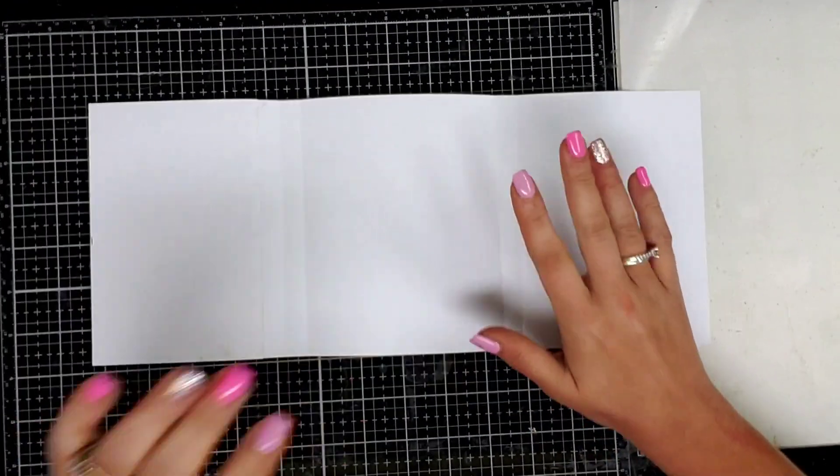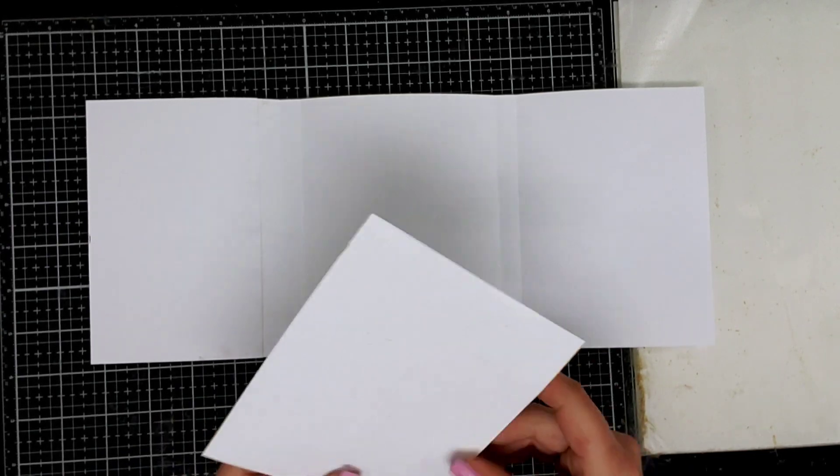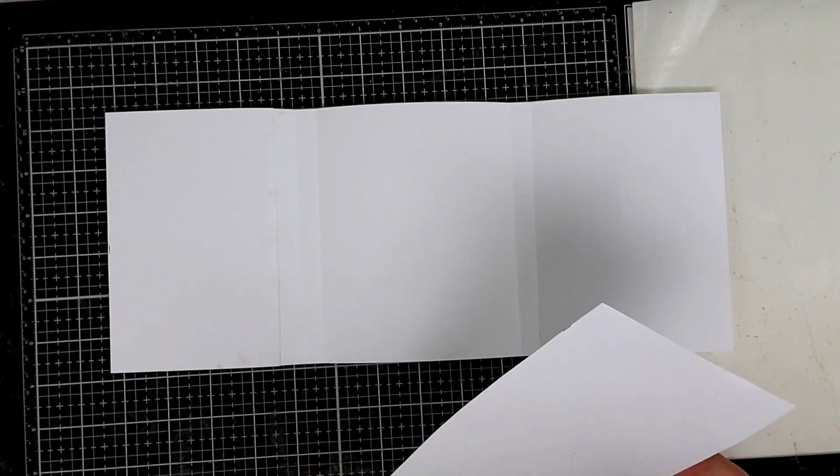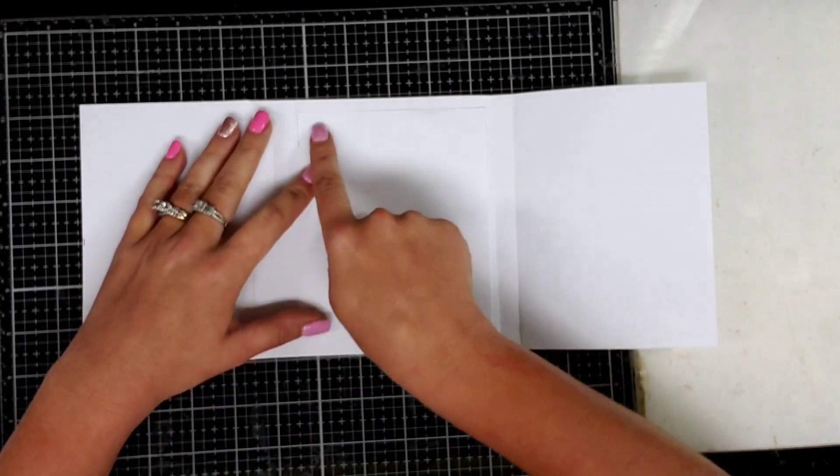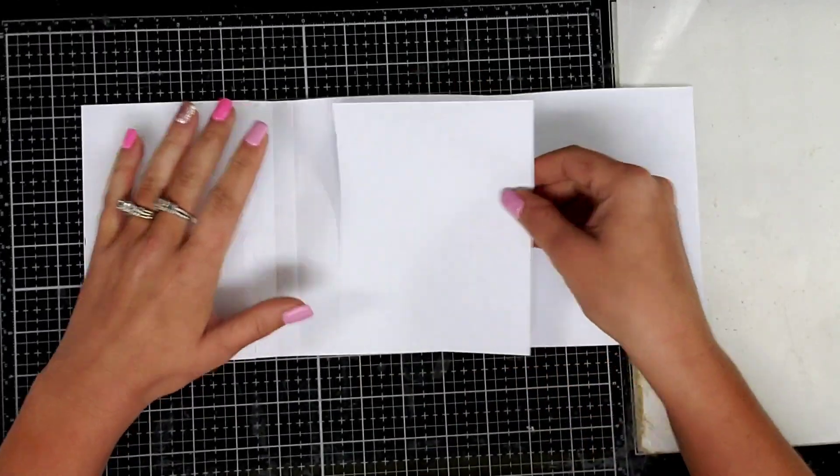After you have that decorated, you're going to cut a piece of paper 4 1/2 inches by 5 3/4 inches. Or you can make it a little longer if you want. I did mine 5 3/4 inches because I wanted it a little bit smaller than the top of the page.